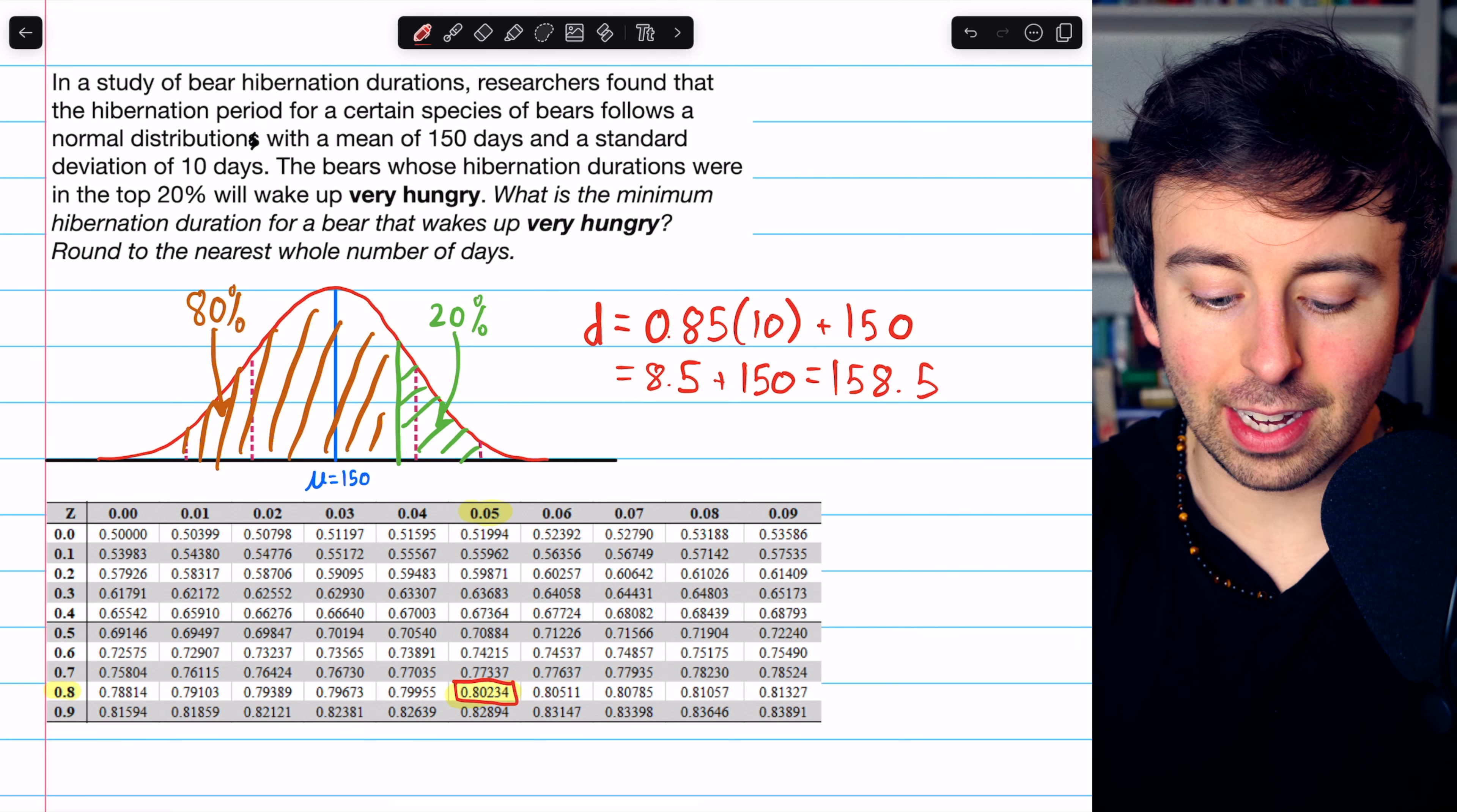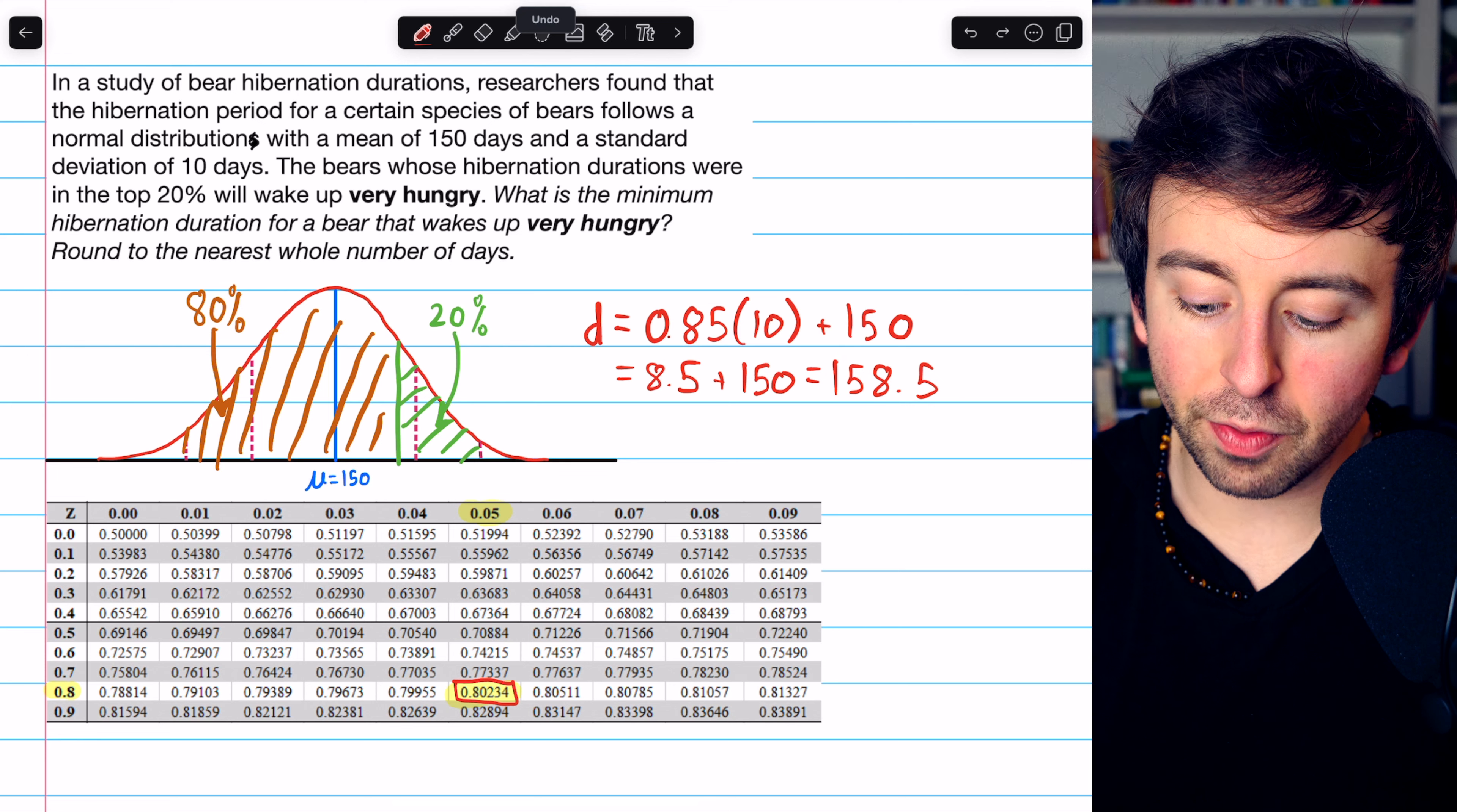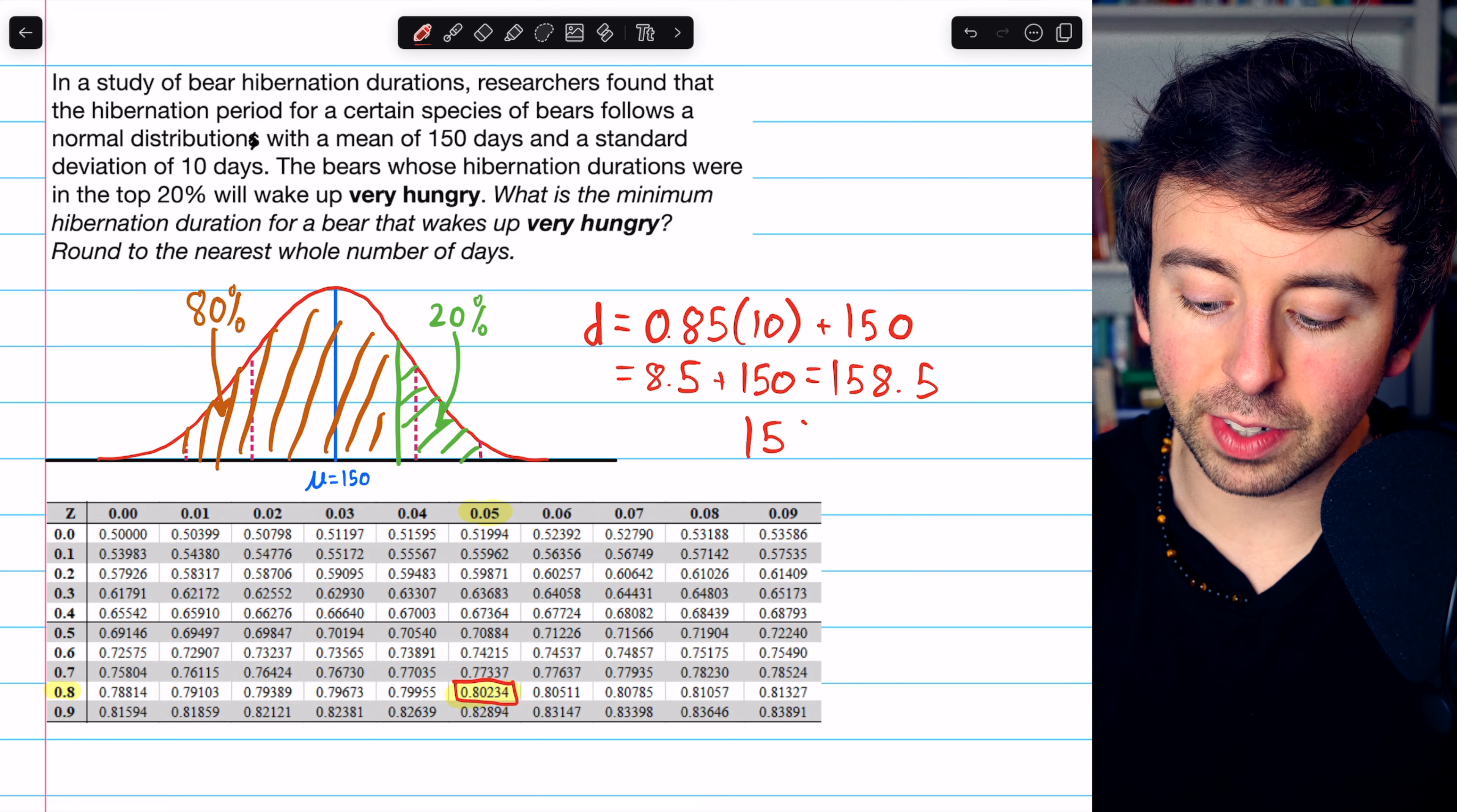We need to round this to the nearest whole number of days. By convention, we would round the 0.5 up for a final answer of 159 days.